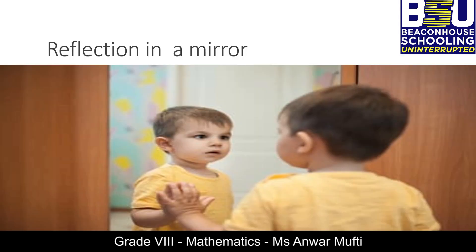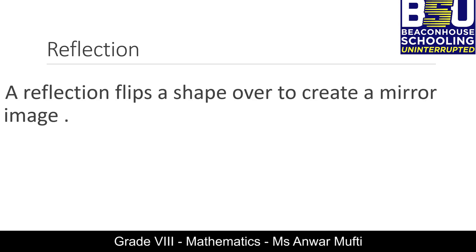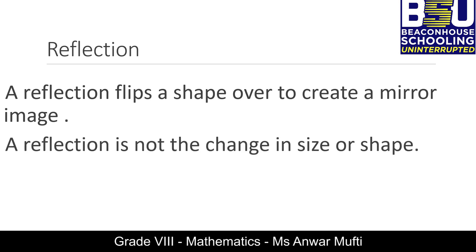When we look in a mirror we see our mirror image, but everything is opposite — if we have some writing on our shirt, it will be backward. Reflection is a type of transformation where a shape is flipped over to create a mirror image. There is no change in size or shape.